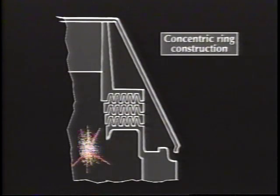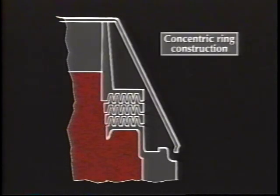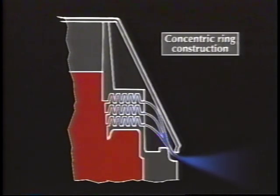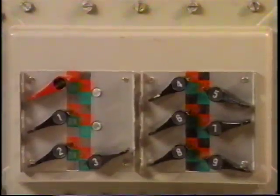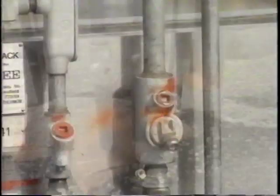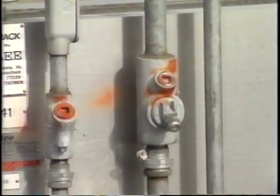Explosion control design works by keeping the explosion inside the enclosure and then very slowly venting and cooling the burning gases. Venting cooled gases prevents ignition of atmospheres outside of the equipment. You also want to confine any explosion to the immediate enclosure area with seal-off fittings.